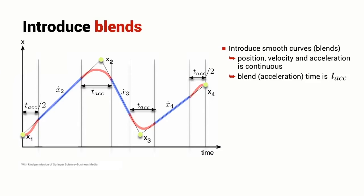So our path now consists of segments of linear velocity with parabolic or higher order polynomial blends to join them together. We can consider the motion in terms of three segments. The first segment gets us from point one to point two, second segment from point two to point three and so on.